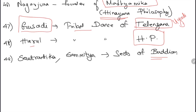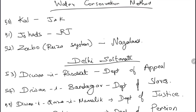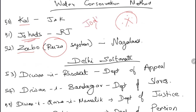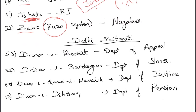Some water conservation methods that have appeared in UPSC: Kul is in Jammu & Kashmir; Johad is in Rajasthan — remember it using Jodha Akbar, she was also from Rajasthan; Zabo (also called Ruza system) is in Nagaland.